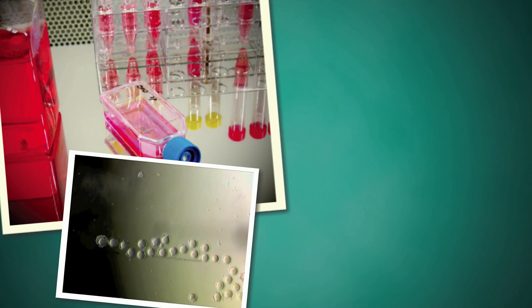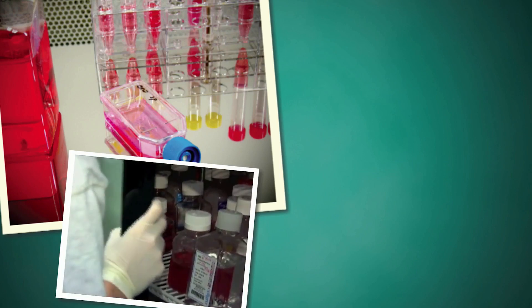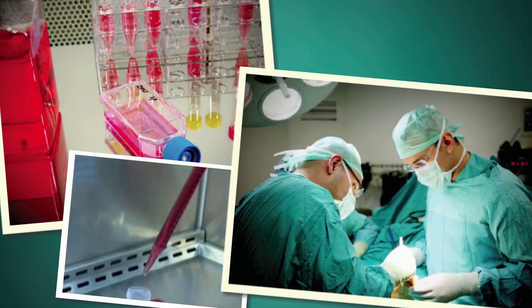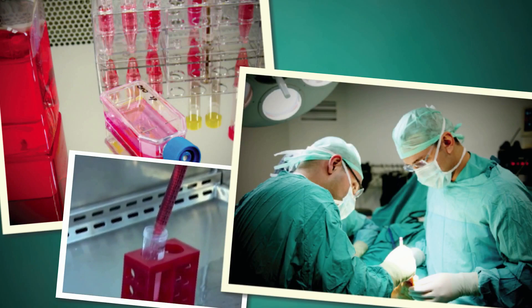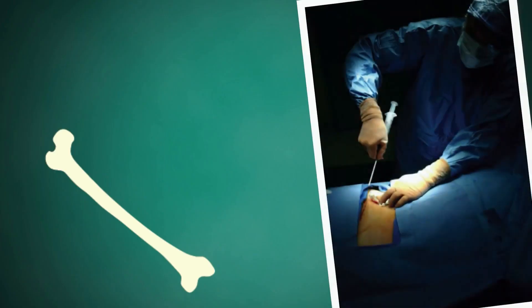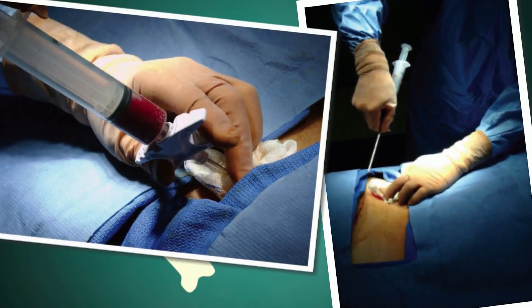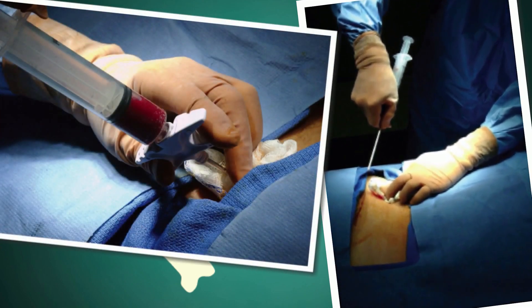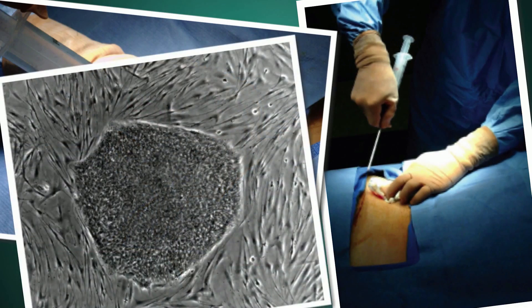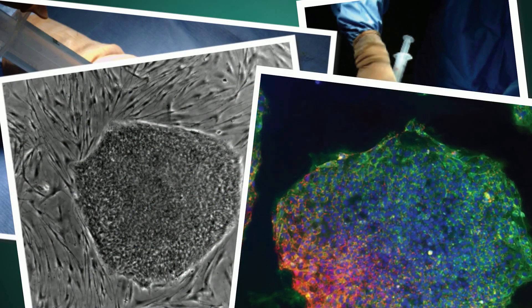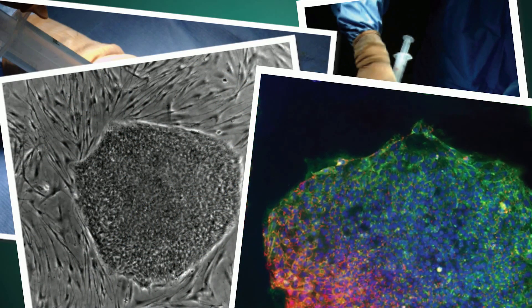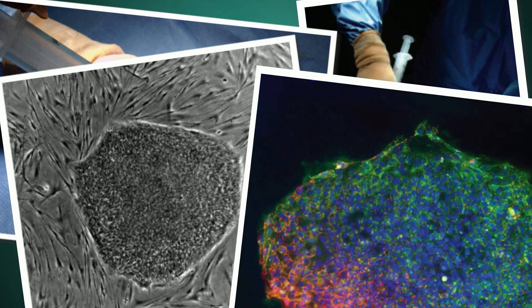Another approach to regenerative medicine is to grow stem cells in a lab and transplant them into patients. Building on technology developed for bone marrow transplants, scientists are developing new ways to use somatic stem cells. They are also looking at embryonic stem cells and induced pluripotent stem cells, both of which can give rise to any type of cell in the body.